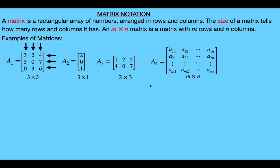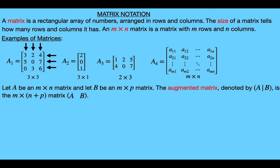Sometimes we want to combine matrices together. If we're given two matrices satisfying certain conditions, we can glue them together to make one matrix called the augmented matrix. If A is an M by N matrix and B is an M by P matrix — meaning both have M rows — we can write A first and then B right after. The result still has M rows, but now has N plus P columns. So the augmented matrix is an M by N plus P matrix.